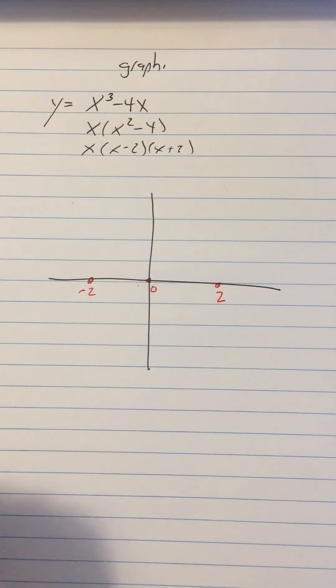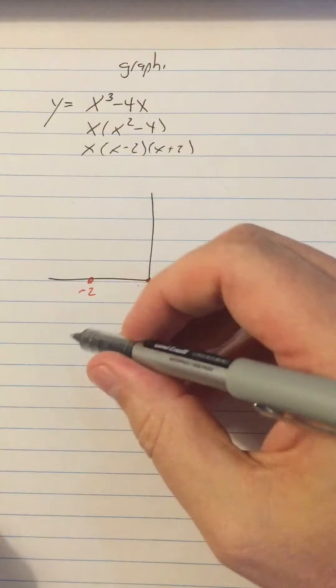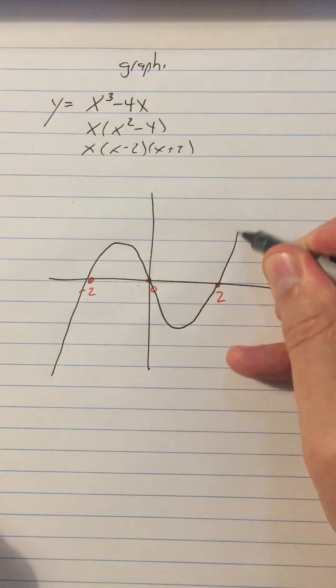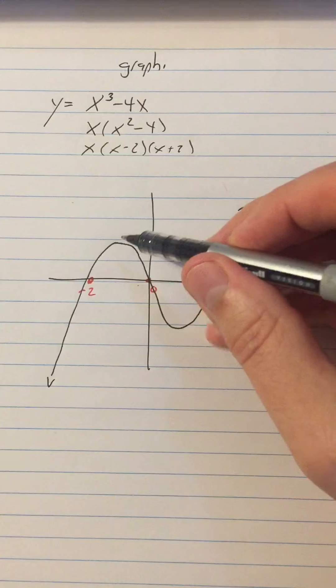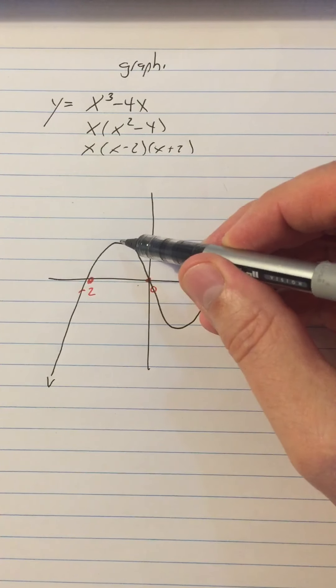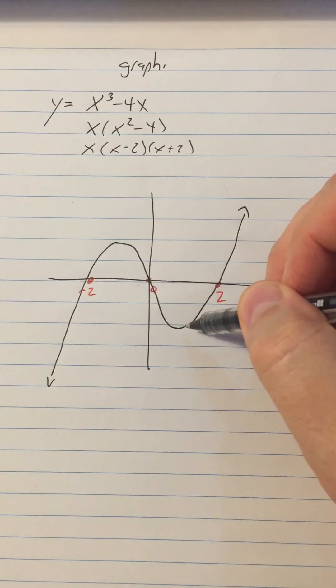And then I can look at the end behavior. It's a positive cubic, so it goes like this. And then the other thing that we would say in Algebra 2 is, don't assume that these maxima are at negative 1 and 1. They're not.